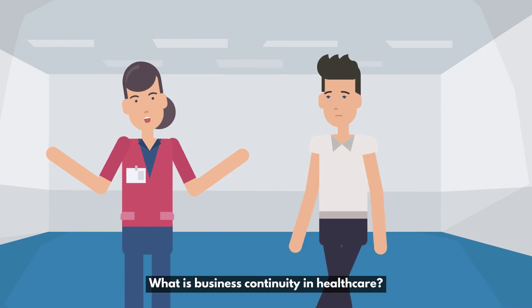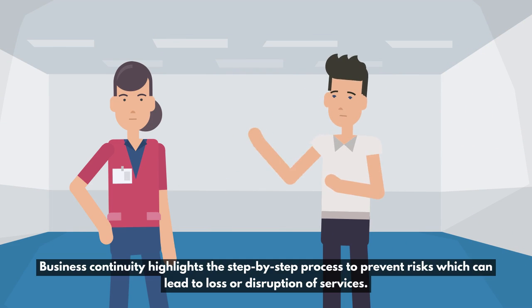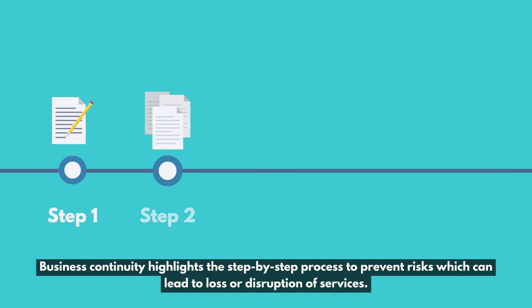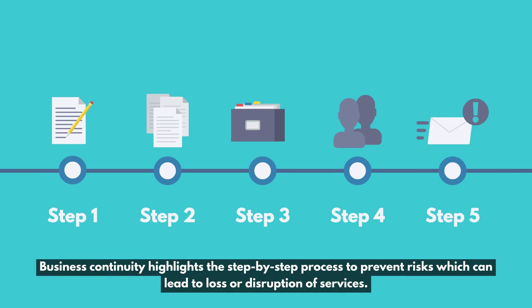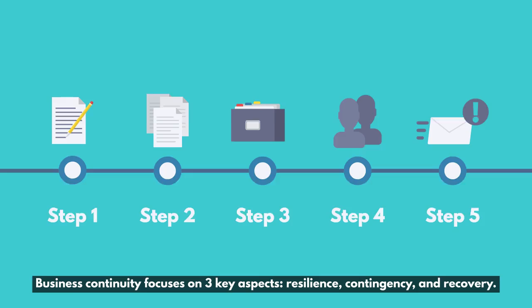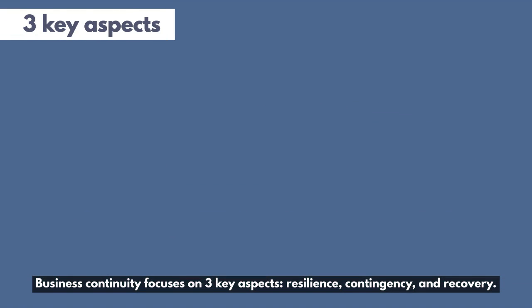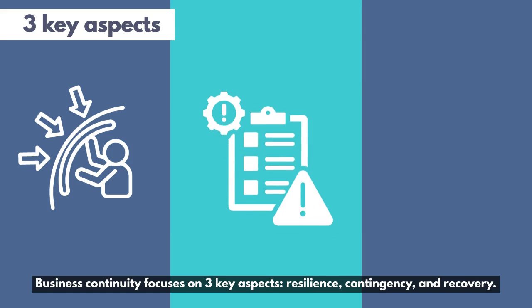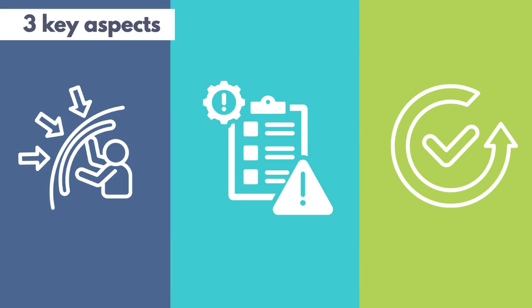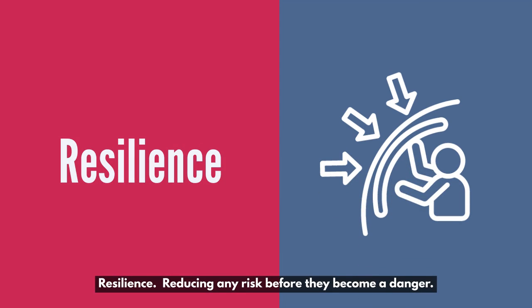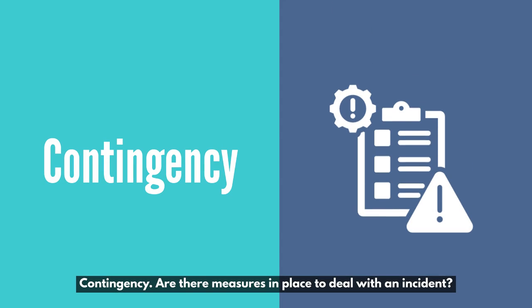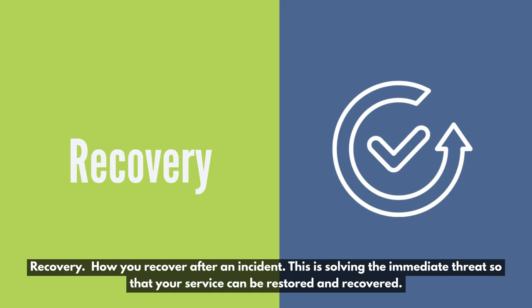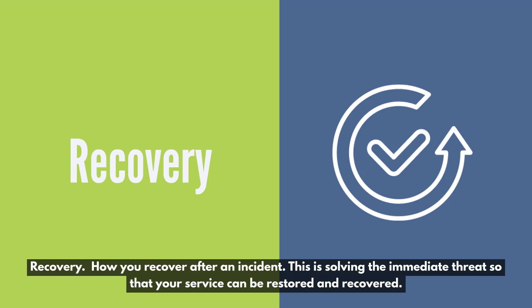What is business continuity in healthcare? Business continuity highlights the step-by-step process to prevent risks which can lead to loss or disruption of services. Business continuity focuses on three key aspects: resilience, contingency, and recovery. Resilience is reducing any risk before they become a danger. Contingency means having measures in place to deal with an incident. Recovery is how you recover after an incident, solving the immediate threat so that your service can be restored and recovered.